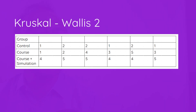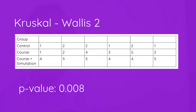Here we have six participants in each of three groups: the control group with their ratings, the course group with their ratings, and the course-plus-simulation group. These are their ratings on the single Likert question of how confident they are that they would be able to use the department's IT security procedures.